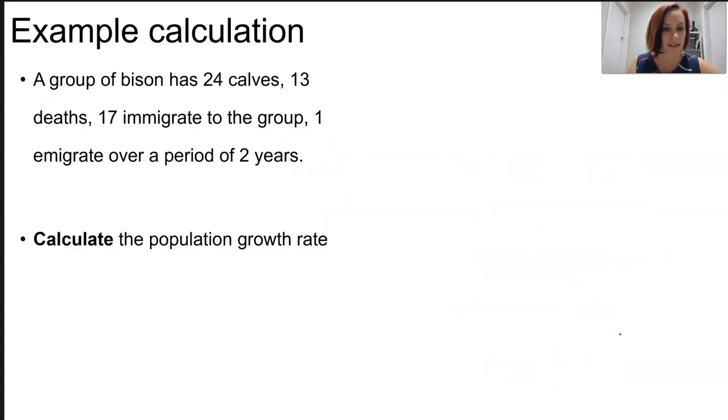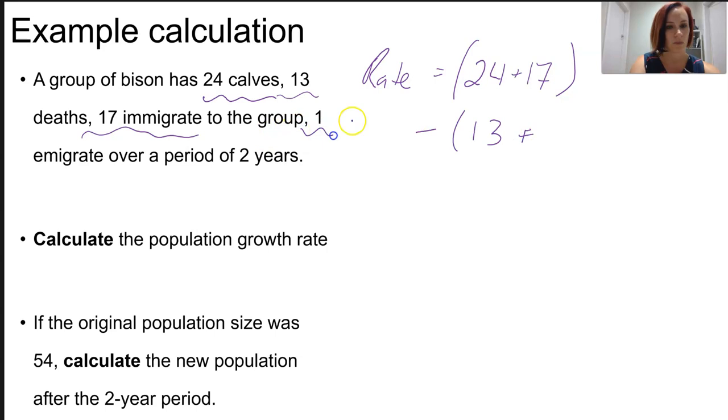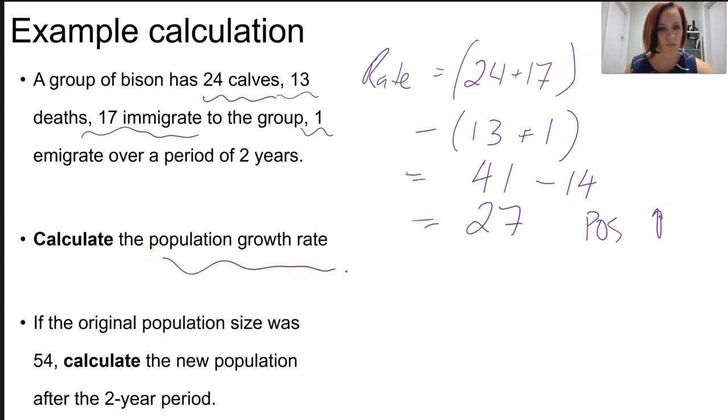Here's another example. We've got a group of bison. We want to calculate the growth rate and the new population. If we start, we've got 24 calves, 13 deaths, 17 immigrate, and we are adding in one emigration. We've got 41 take 14, which is going to give us a 27. This is positive, which means the population is in incline, it's getting bigger. This is our growth rate. It would be 27 organisms or animals per year, 27 bison per year.